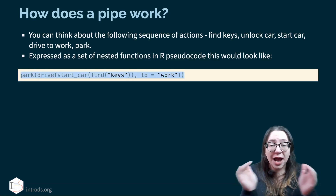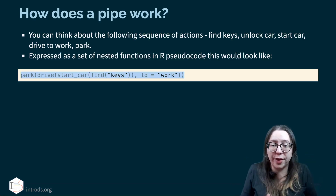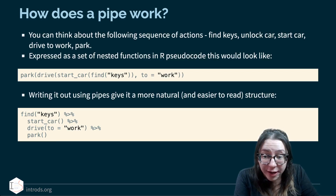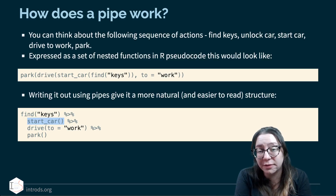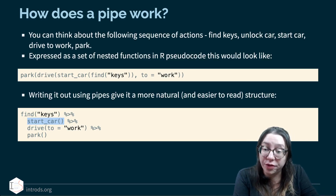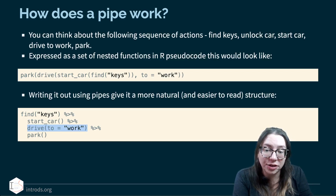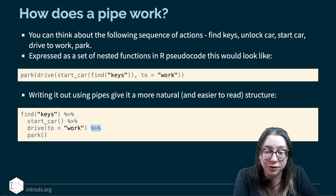Writing with pipes gives a more natural, easier-to-read structure: find keys, then start the car with those keys, then drive to work. The pipe operator takes what comes before it and uses it as the first argument of the next line of code. You can add additional arguments to functions that get tagged on after what the pipe passes in, then park the car you drove to work.